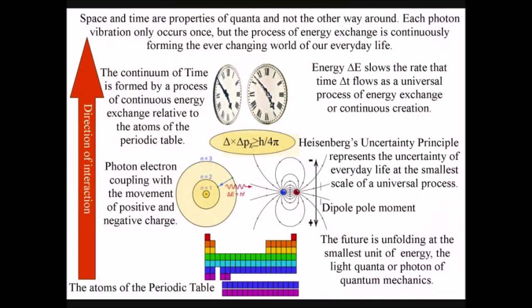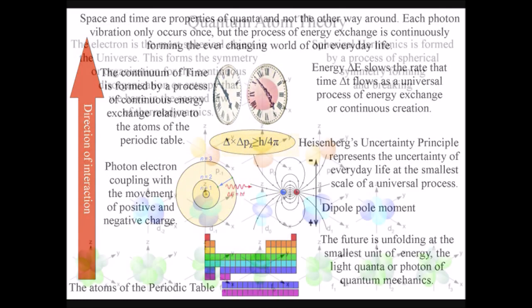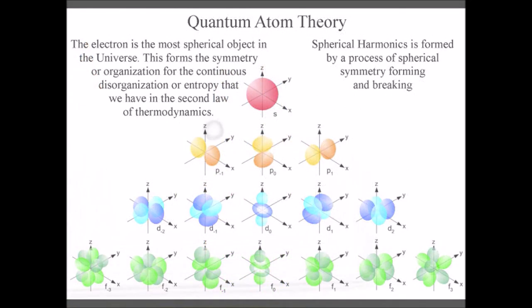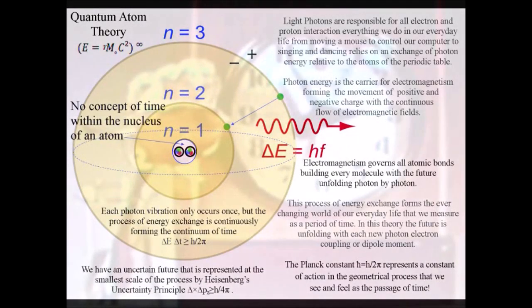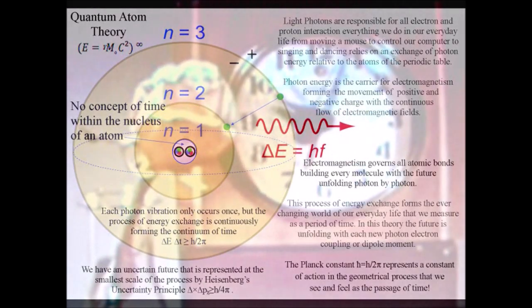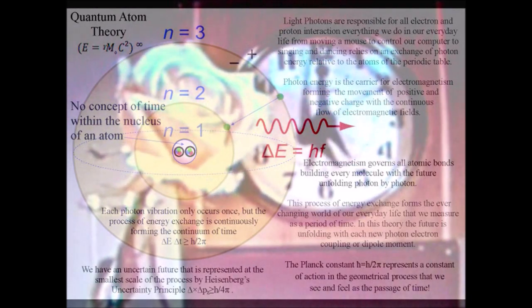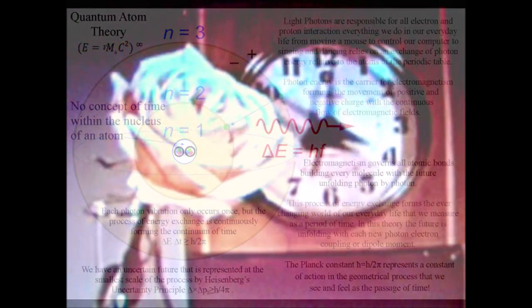In this theory each point on the wave front represents the potential for a photon spherical oscillation or vibration. We have photon-electron couplings or dipole moments forming the potential for new spherical waves. The wave front can only spread out in the forward direction because it is part of an emergent process that forms the forward passage of time.